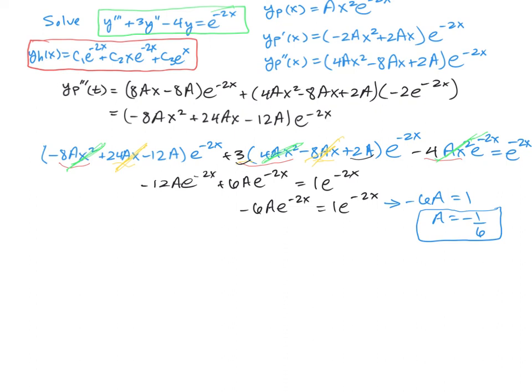To wrap this up, our particular solution yp(x) is negative 1/6 x²e^(-2x).